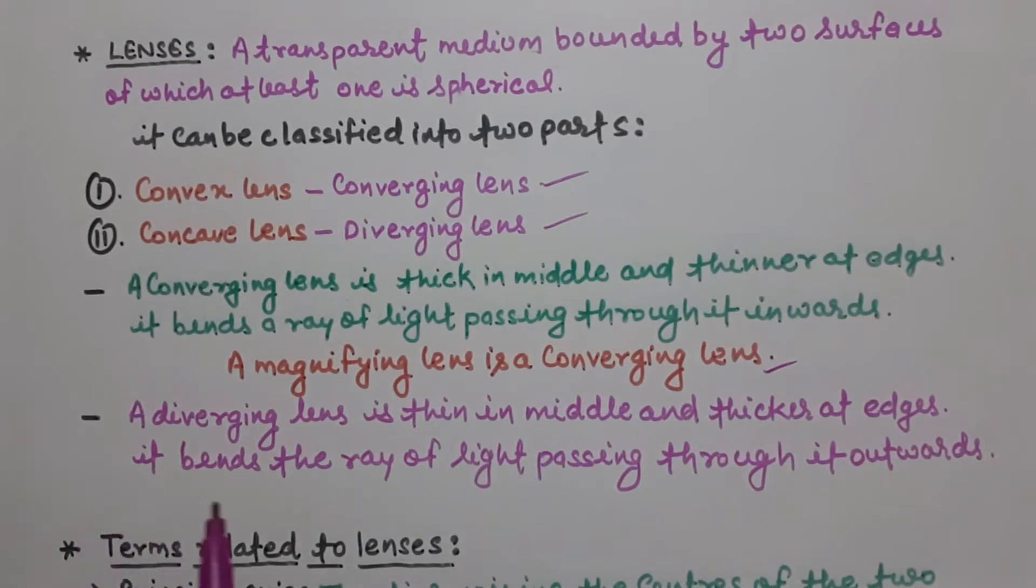A diverging lens is thin in middle and thicker at edges. And what does it do? It bends the ray of light passing through it outwards. So now come to the next point.